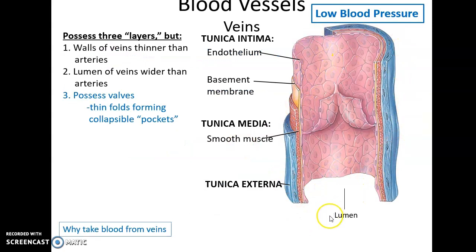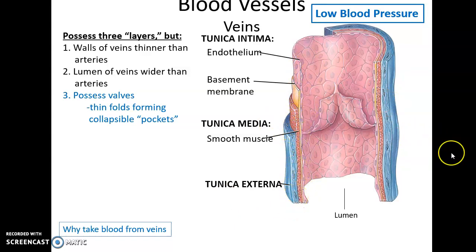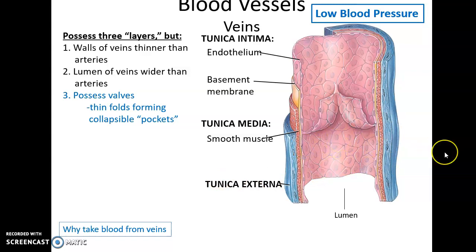The vein is very similar to the artery in that it has all three layers: tunica intima, the internal layer that's nice and smooth; tunica media, the smooth muscle tissue; and tunica externa. However, the vein's walls are much thinner than the arteries and have much less smooth muscle tissue. This is because veins are under extremely low blood pressure. Because of the thin walls, veins also have a larger lumen, so they carry more blood than arteries do.